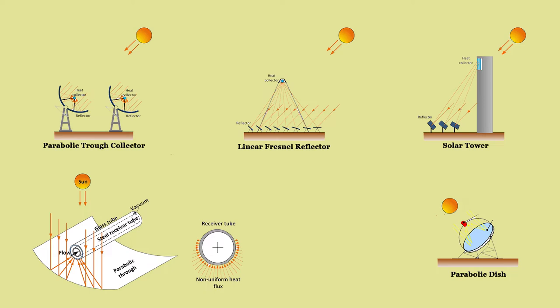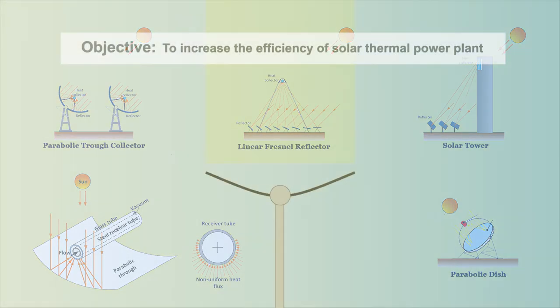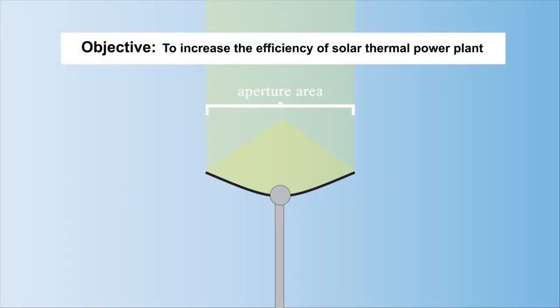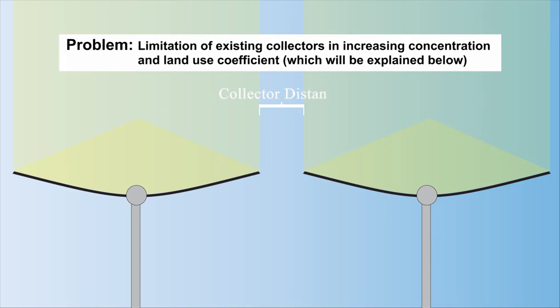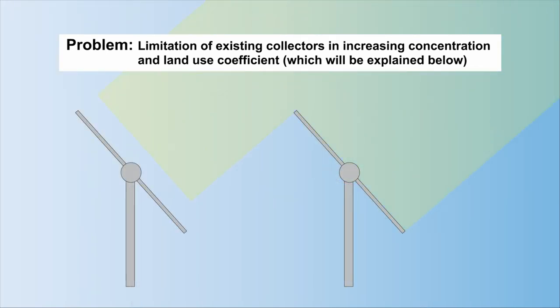Parabolic dish power plants are not widely used. Increasing the efficiency of solar thermal plants requires increasing their concentration and the land use factor. There are limits to achieve this target for all types of existing solar concentrators, such as shading and blocking.